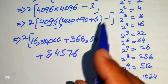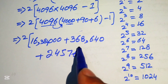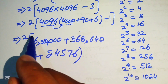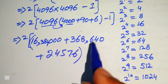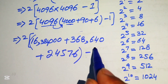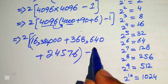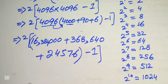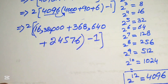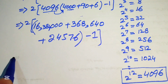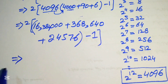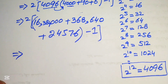After these multiplications, we need to add all of these numbers and then subtract 1. We use the traditional method of addition.